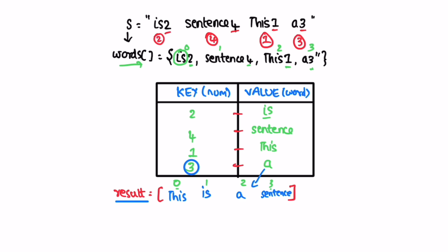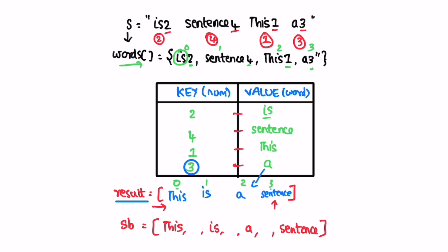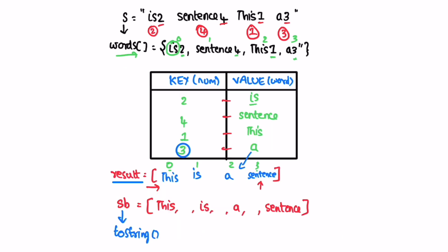Now we have the final answer inside the result array but we need to convert it to a string. We use a StringBuilder, converting it into a string using the toString method. We iterate through the result array from left to right, appending each entry and adding a space after each word. Until the last word we add a space, but once we reach the last word we only append that word using the append method without adding a trailing space.